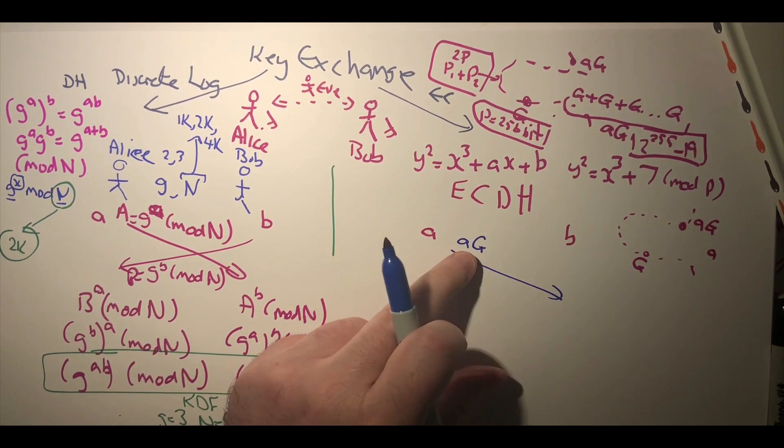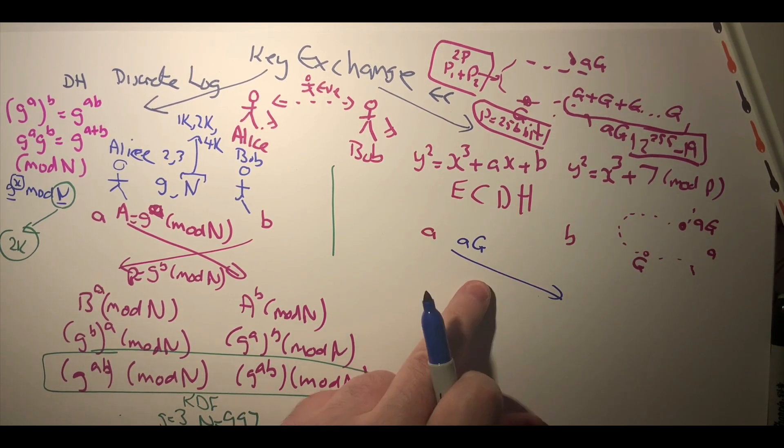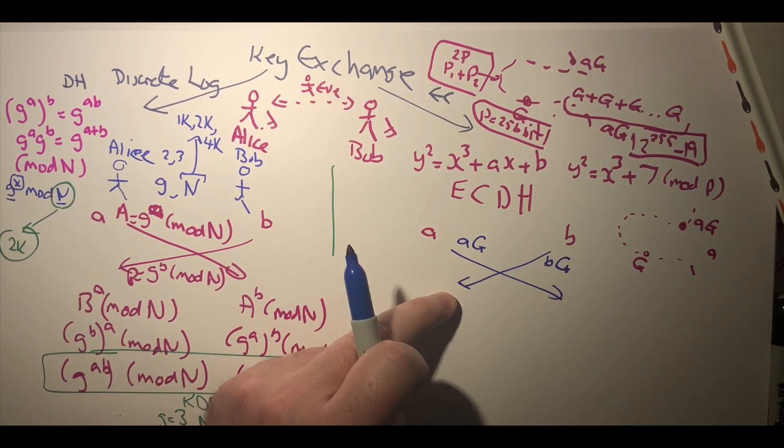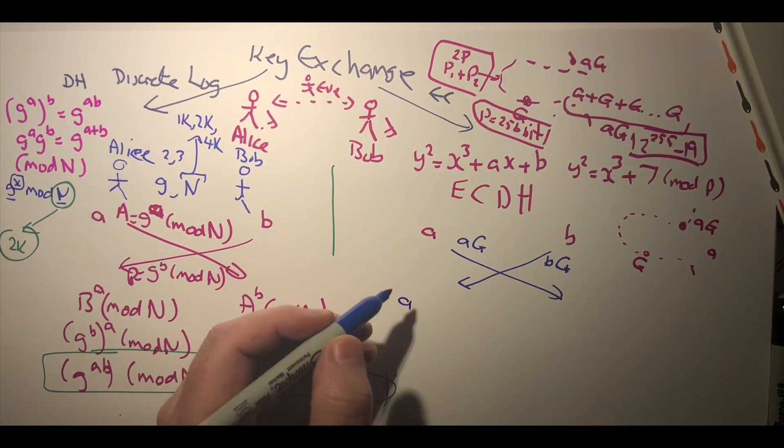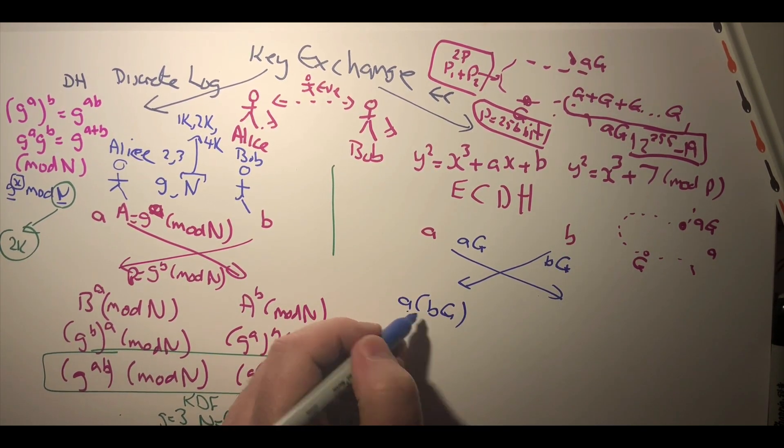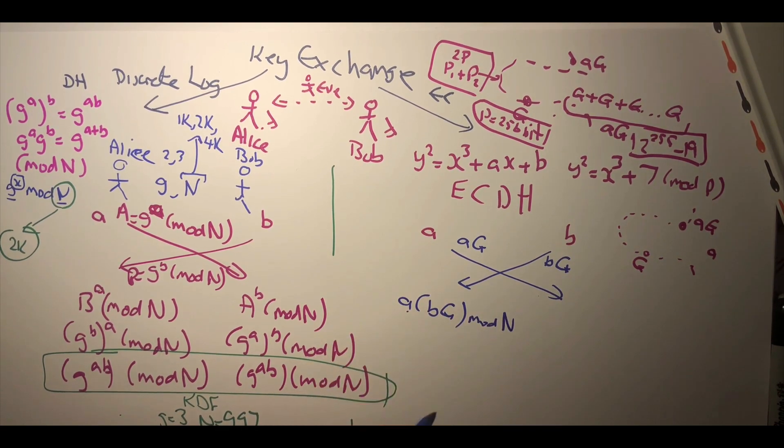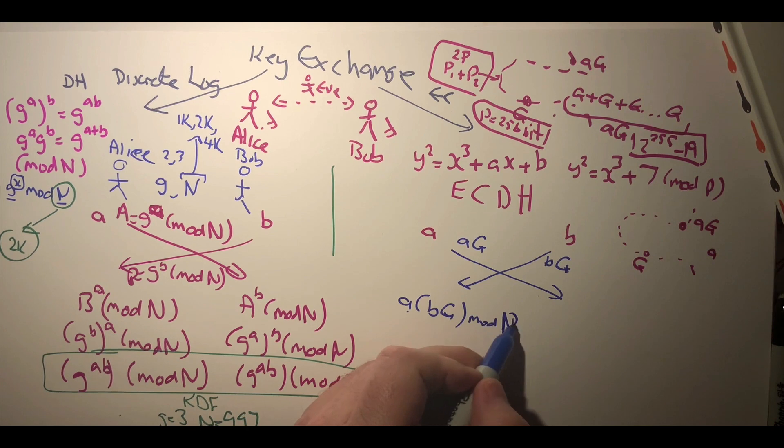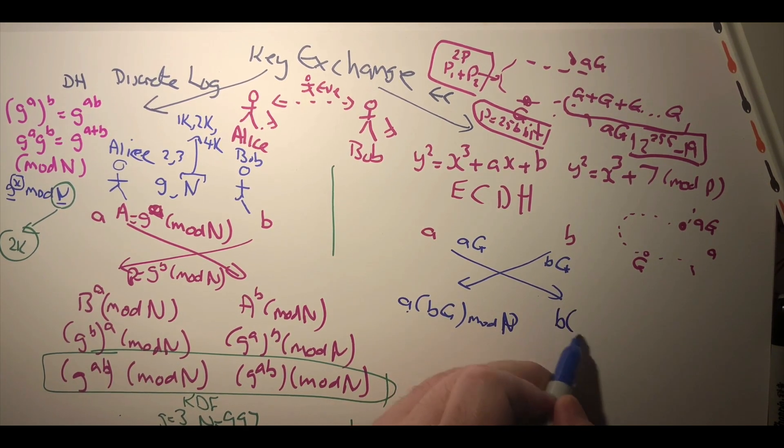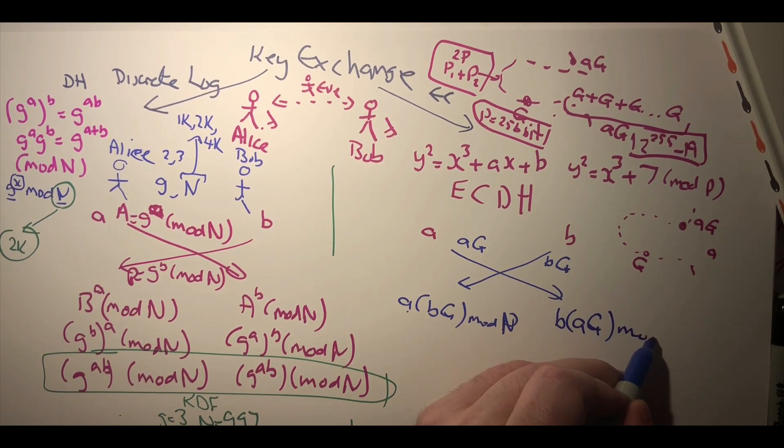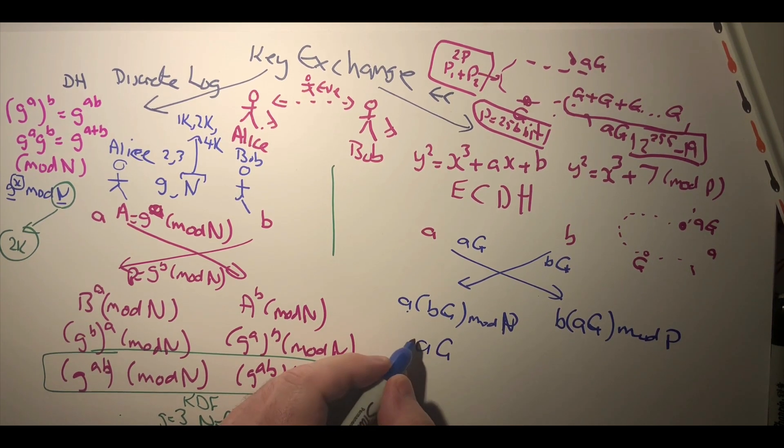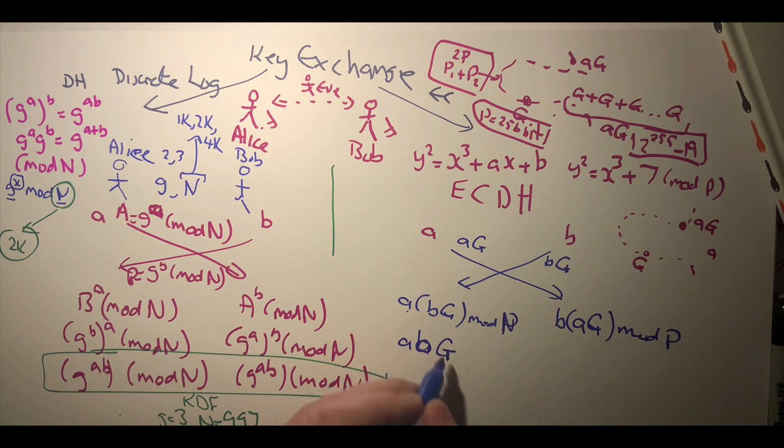Alice sends the point ag on the curve and Bob will send the value bg. Next, Alice takes the value received and multiplies by a, and then Bob will do the same, take his value and calculate.